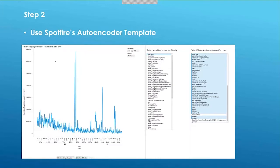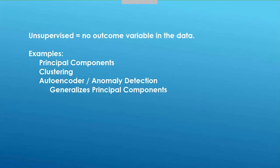Here's one of the templates we used for this. You can try to visualize some of the data, and the point is that you would select the variables you're going to use. In most cases you would use just about all of the data, because we're talking about an unsupervised learning situation. We don't have an outcome variable that we're looking for — we're looking for some kind of anomaly that is atypical.